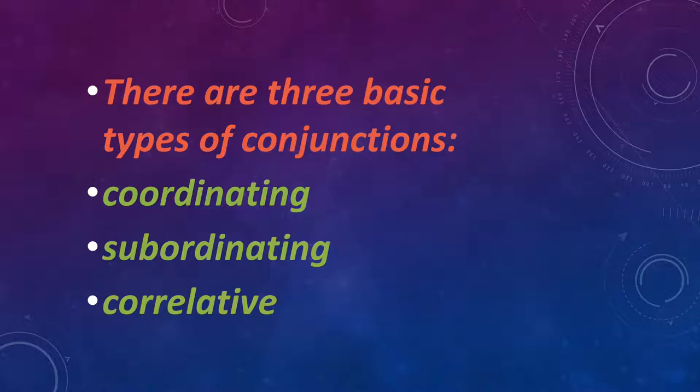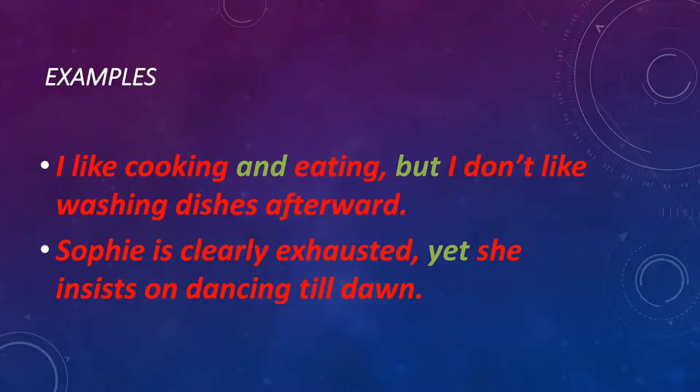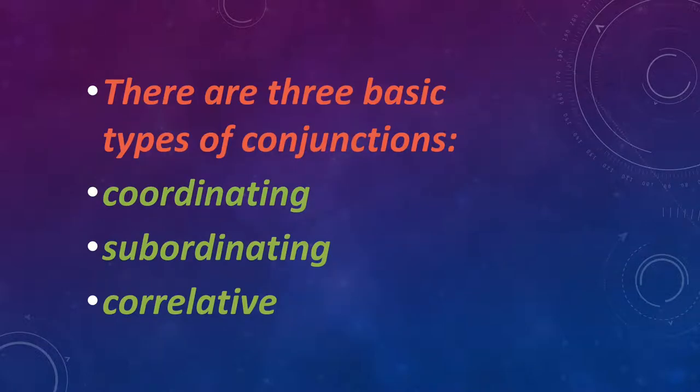Subordinating conjunctions are those conjunctions that connect a main sentence and a dependent sentence. For example, in the sentence 'Sophie is clearly exhausted, yet she insists on dancing till dawn,' 'Sophie is clearly exhausted' is the main sentence, while 'she insists on dancing till dawn' is a dependent sentence. Therefore, this is a subordinating conjunction.